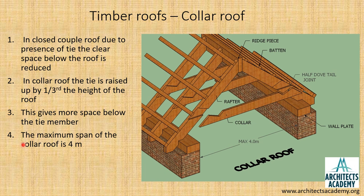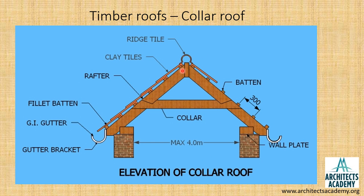As a result of raising the collar up, the maximum span is slightly reduced compared to the closed couple roof, and it now becomes 4 meters. In cross-section you can see the two wall plates, the two inclined rafters, and the collar raised up from the wall plate, creating more space below the roof. The collar uses a special joint called the half dovetail joint.